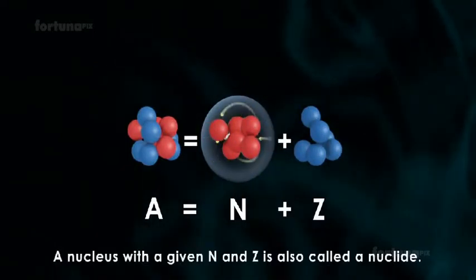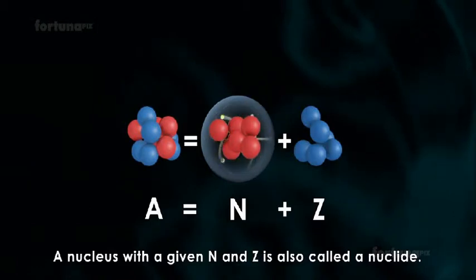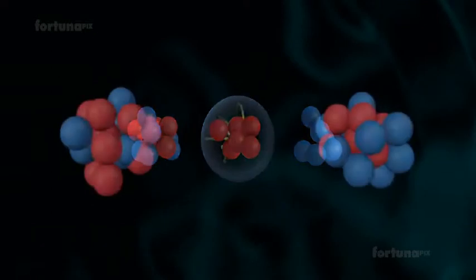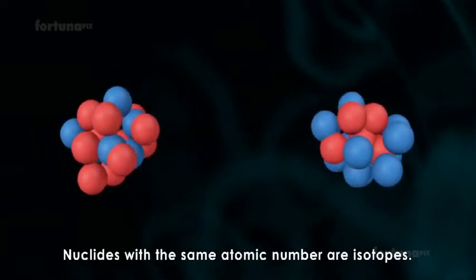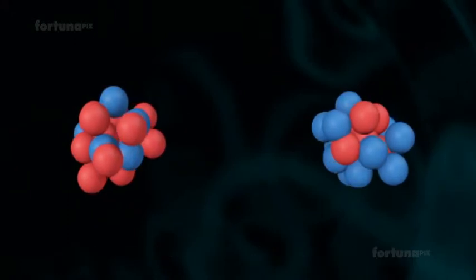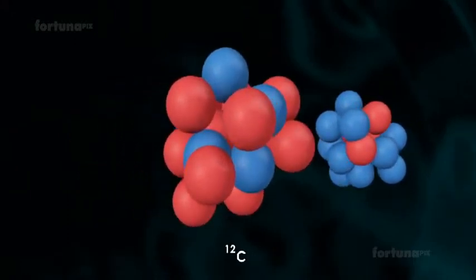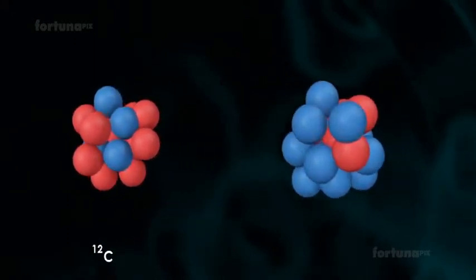A nucleus with a given N and Z is also called a nuclide. Nuclides with the same atomic number are isotopes, such as 12C and 14C.